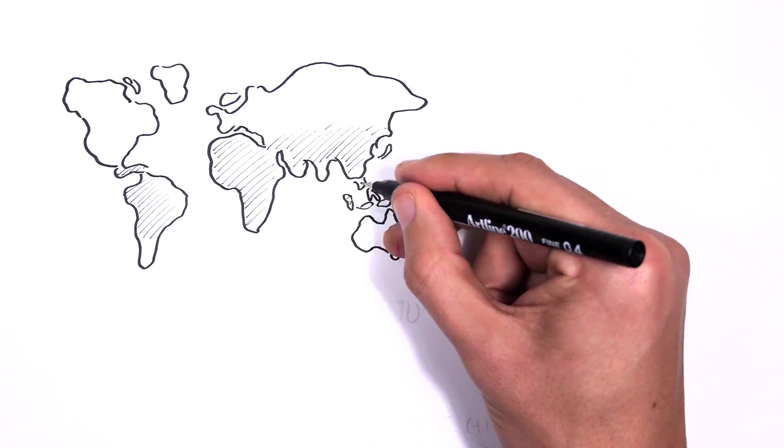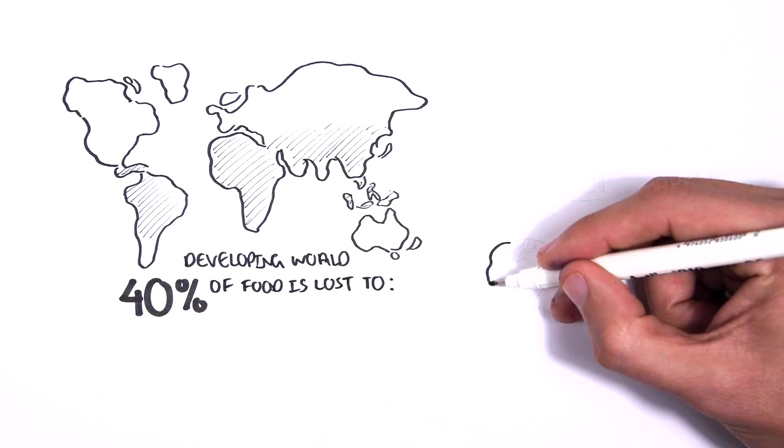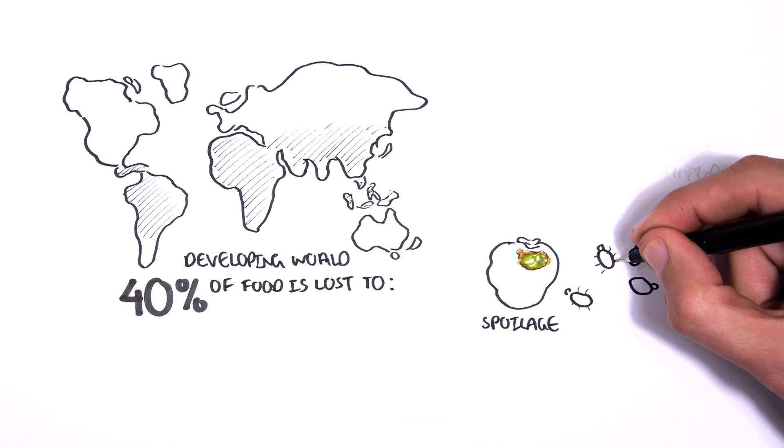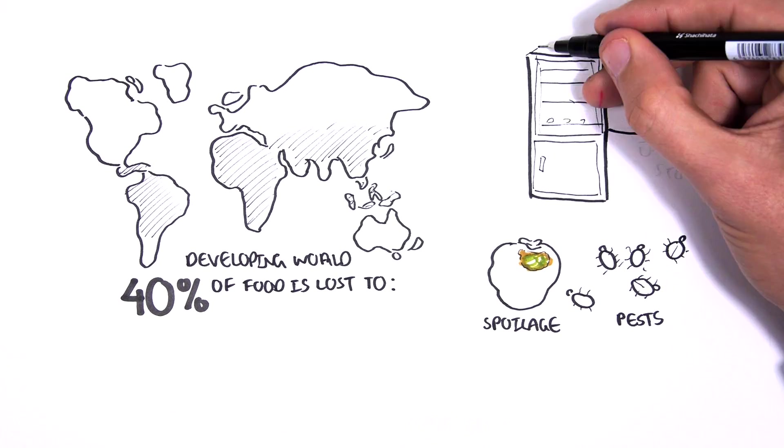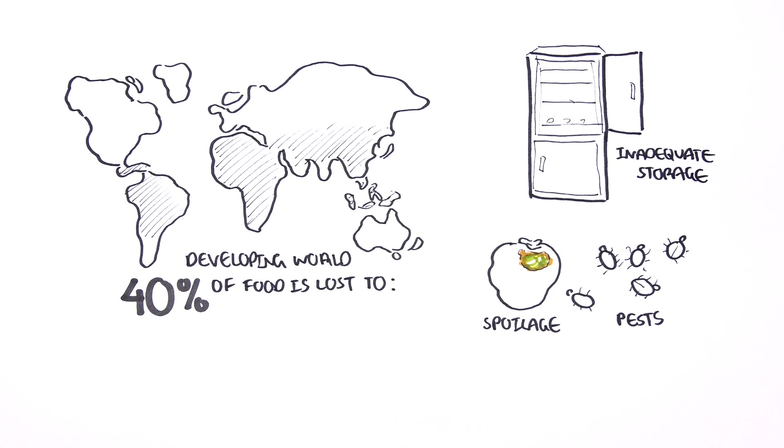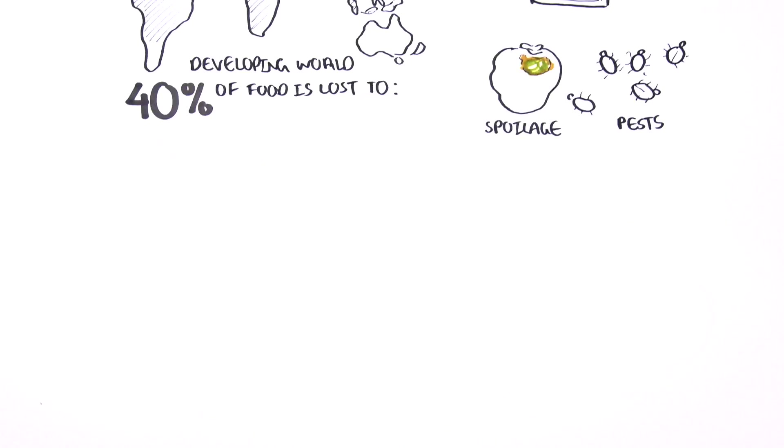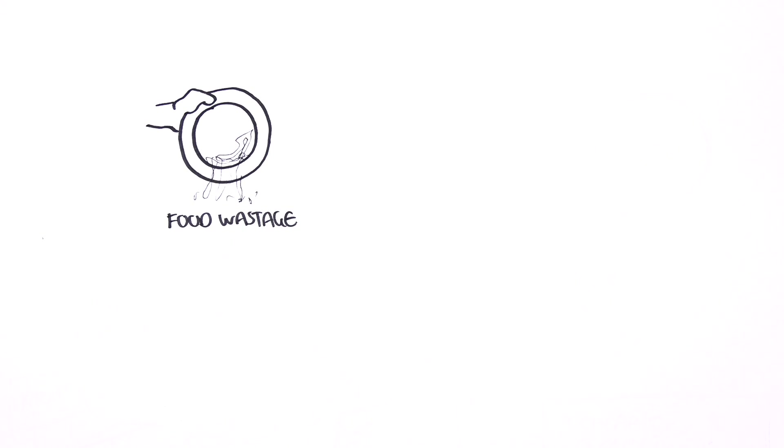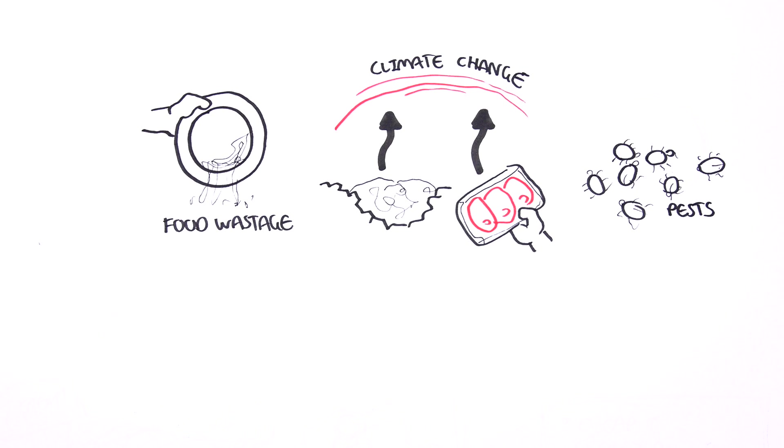In the developing world, as much as 40% of produce is lost to spoilage, pests, or just plain wastage from inadequate storage, refrigeration, packaging, and transportation. But food wastage, climate change, pests, and poor food stability is only part of the problem.